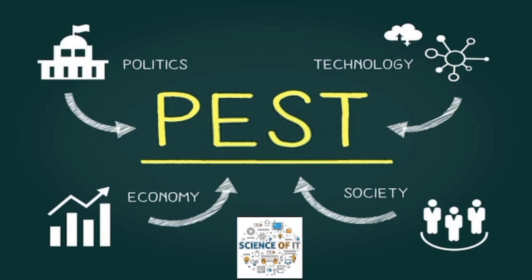In PEST analysis, there are 4 important things. The first one is Politics, the second one is Economics, the third one is Society, and the fourth one is Technology. So we have these 4 important things in PEST analysis.